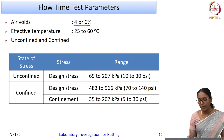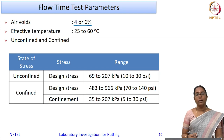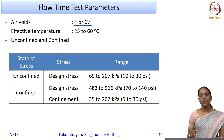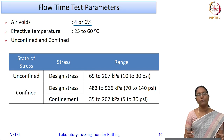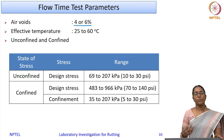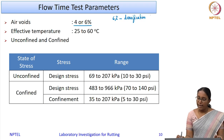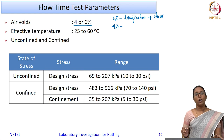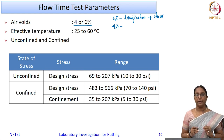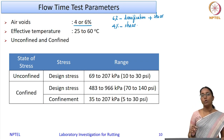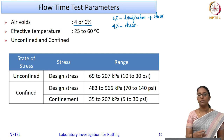The 6% air void condition represents the field condition, since bituminous mixtures are compacted to 6–7% air void in the field. Testing at 6% captures both densification and shear deformation. At 4% air void the material is near refusal density, so there is less densification and mostly shear deformation. Depending on what you want to capture, you can test at either 4% or 6% air void.